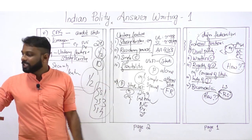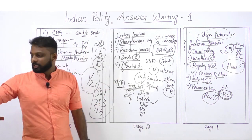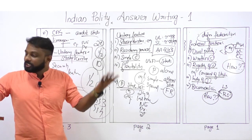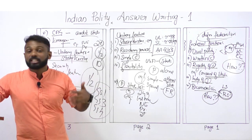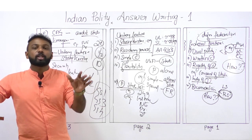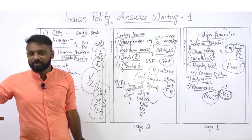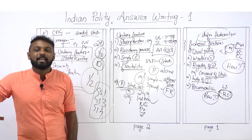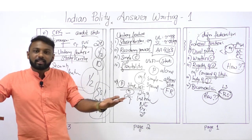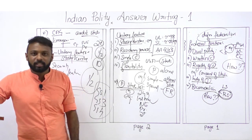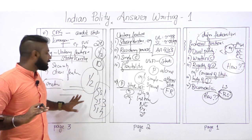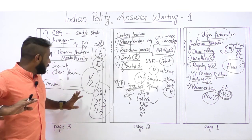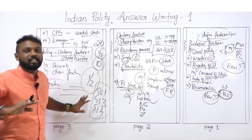If possible, quote from Constitution makers or national leaders. For example, Ambedkar said: 'Our Constitution is both unitary as well as federal according to the requirements of time and circumstances.' You can quote these kinds of statements from national leaders or give another attractive dynamic conclusion, because after reading the conclusion, the evaluator assigns you a mark.